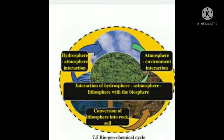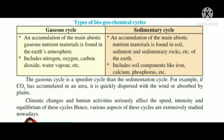This is the interaction of the hydrosphere, atmosphere, and lithosphere with the biosphere. There are two types of biogeochemical cycles: the gaseous cycle and the sedimentary cycle.